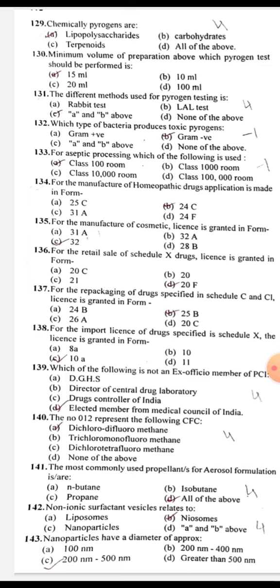Gram-negative bacteria produce toxic agents or pyrogens. For aseptic processing, a Class 100 room is used.